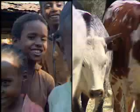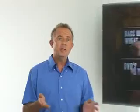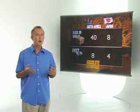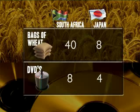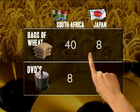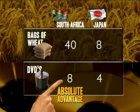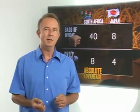Let's try and take the theory a bit further. According to this new table, we assume that South Africa has an absolute advantage with both products — it can efficiently produce either wheat or DVDs. Looking at this new data, it would seem that there is no longer any reason for trade between these two countries. But this is not quite true. Let's see why.